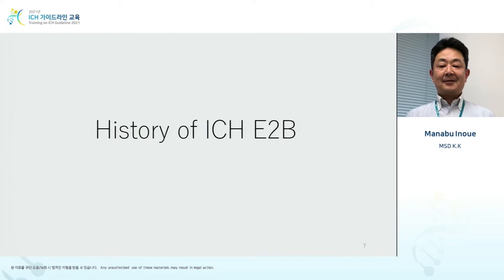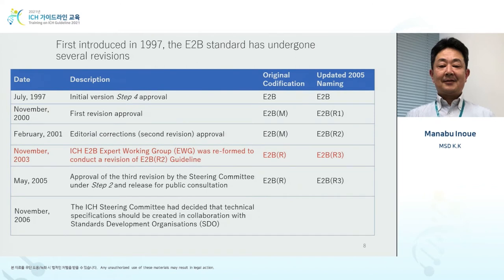Now let's take a look at the history of ICH E2B. The first work started back in 1997. After that, in November 2003, regarding the E2B topic, there was a revision — the first time a revision started. This led to the current E2B R3. 'R' represents revision, and the number means how many revisions have been made. So when we say E2B R3, it means there were three revisions.